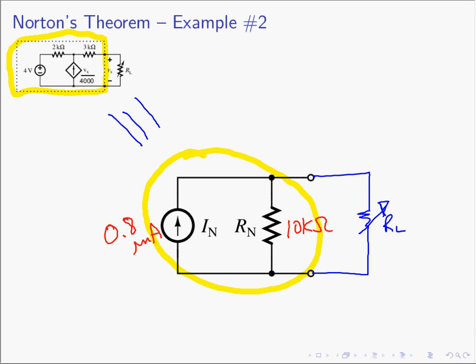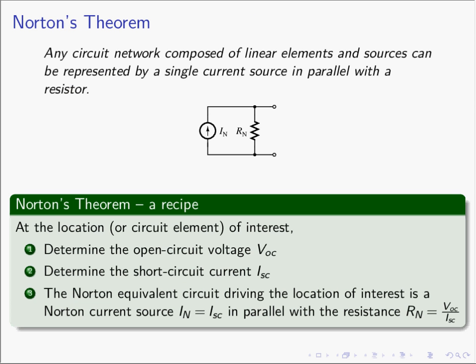Norton's Theorem is very much like Thevenin's Theorem — they're duals of each other. The Norton circuit is a current source in parallel with a resistor, while Thevenin's is a voltage source in series with a resistor. You need to find the same two values — V open circuit and I short circuit — in order to find both.